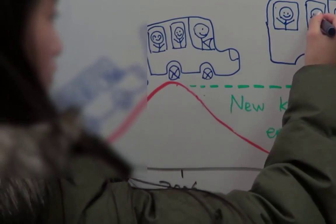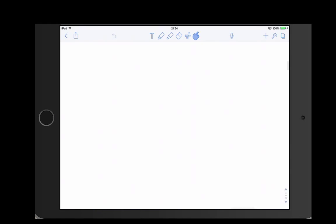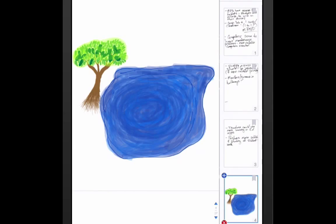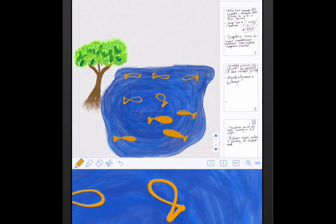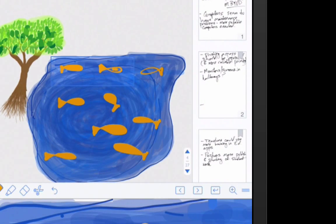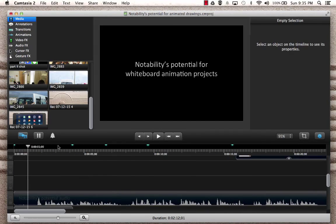This is where Notability might be able to help. Using a combination of Notability running on a tablet and device mirroring software such as Reflector, it is possible to record video footage of a drawing in progress in a screencasting application, like Camtasia.